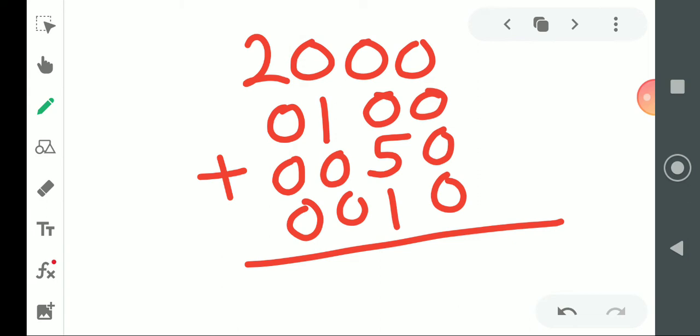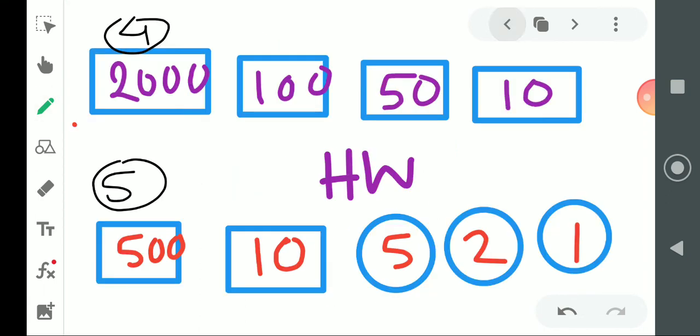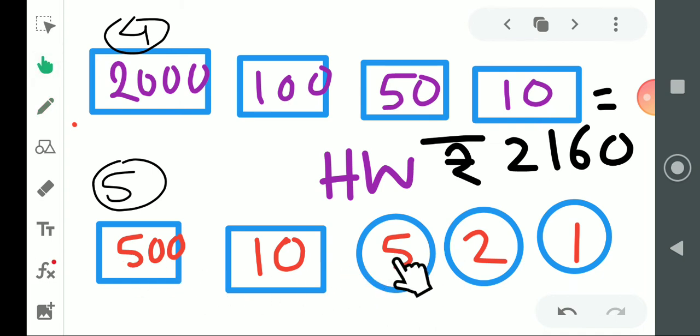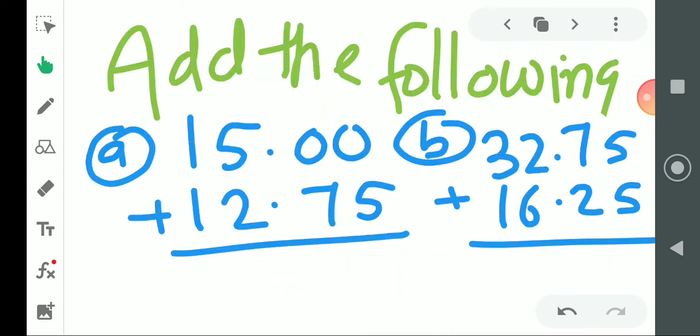Okay, next example. Equal to sign is to be given. Then you have to write this. Students, this is given to you as homework. As I told you, addition has to be done. You have to add and write this, okay?